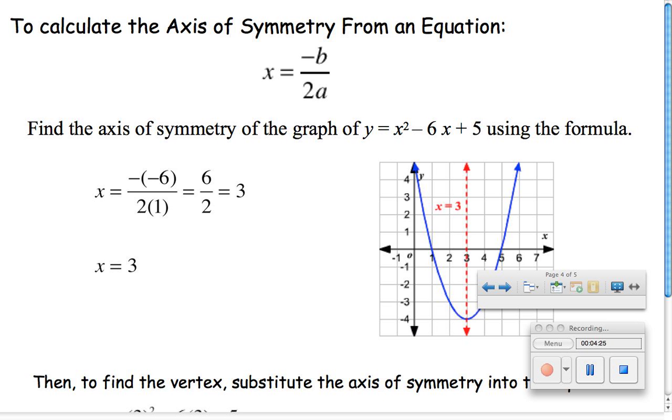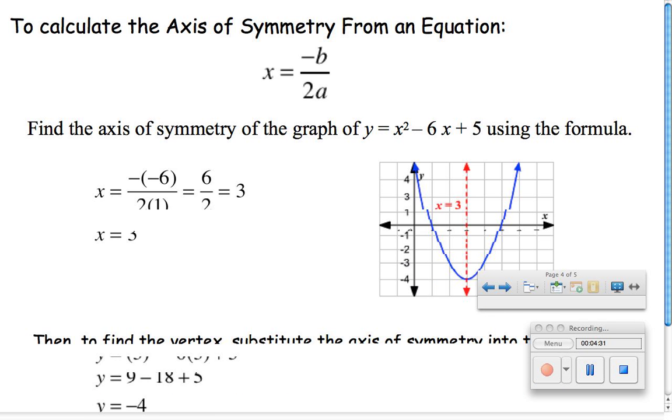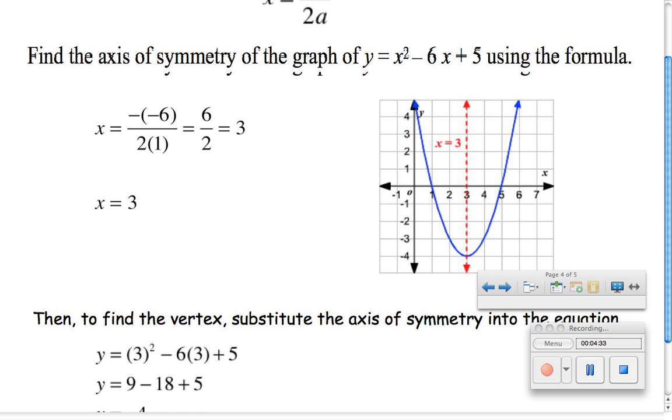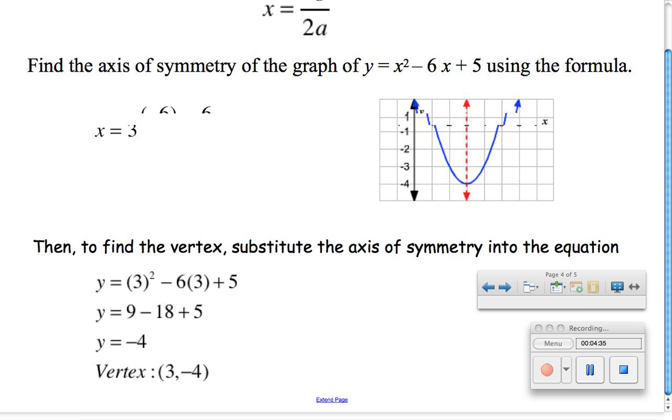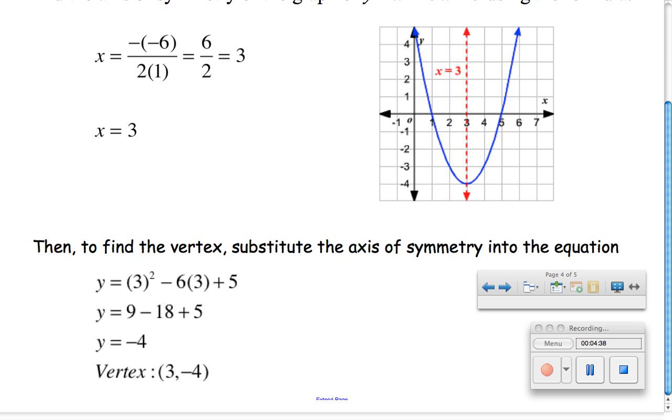So just to summarize, to calculate the axis of symmetry of any parabola, you're going to use the formula x equals negative b over 2a. Once you calculate the axis of symmetry, if you need the vertex, just substitute that value to get y.